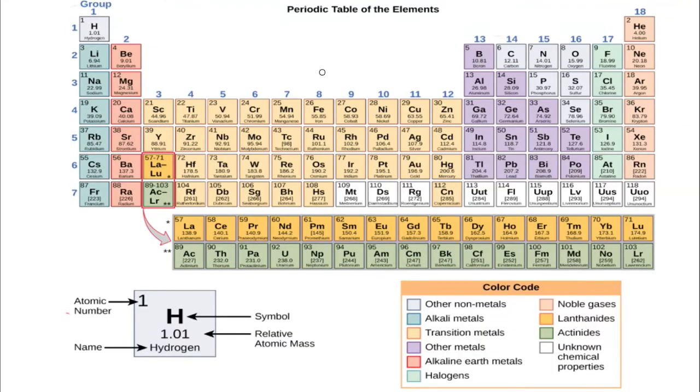Here's the periodic table of elements, and I want to point out first that there are 92 of these, all represented by one of the boxes, that are naturally occurring, and the rest of these are laboratory generated. And we have hydrogen, the very first element here, that we have represented down here in a little bit larger size, so we can talk about what's inside each of the boxes in the periodic table.